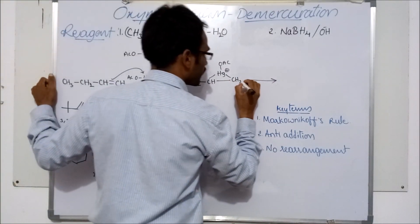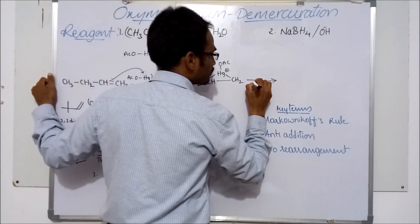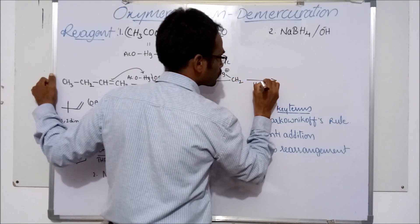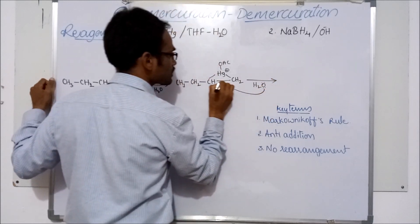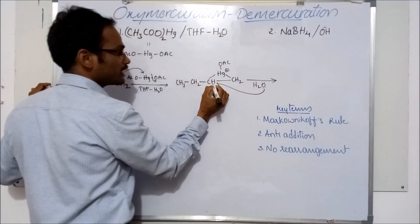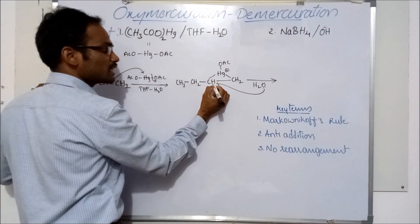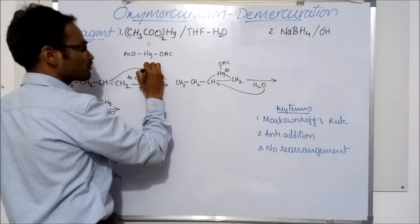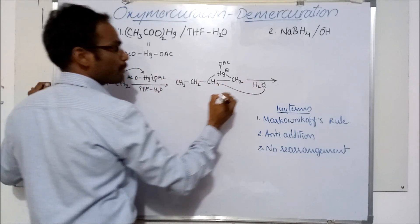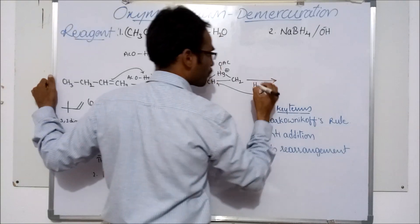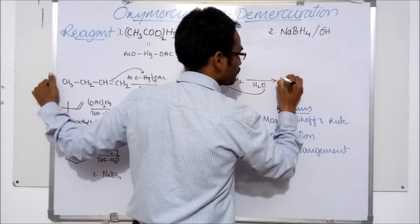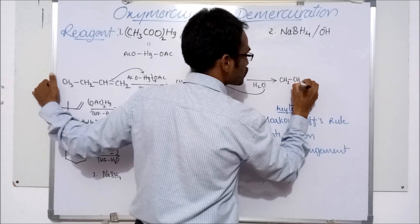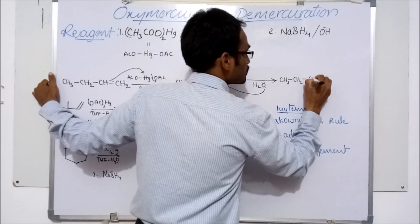From H₂O, the oxygen lone pair of electrons adds to the carbon containing the lesser number of hydrogens, from the back side. Remember: mercury is from the upper side and water attacks from the backward side — that is, the opposite side.